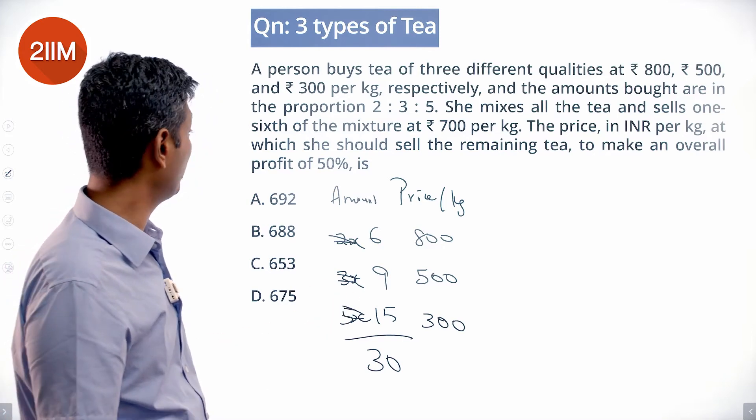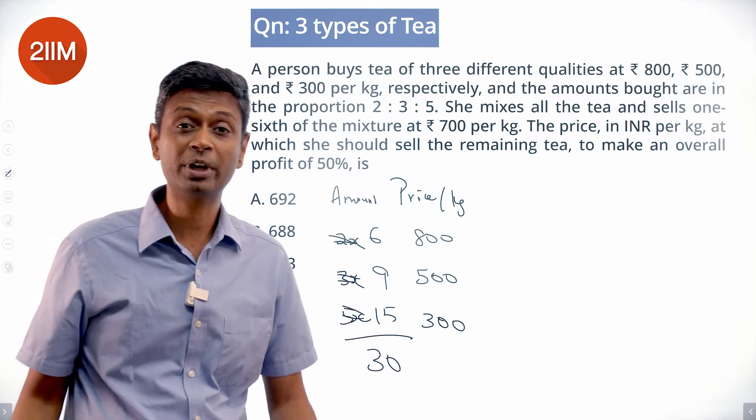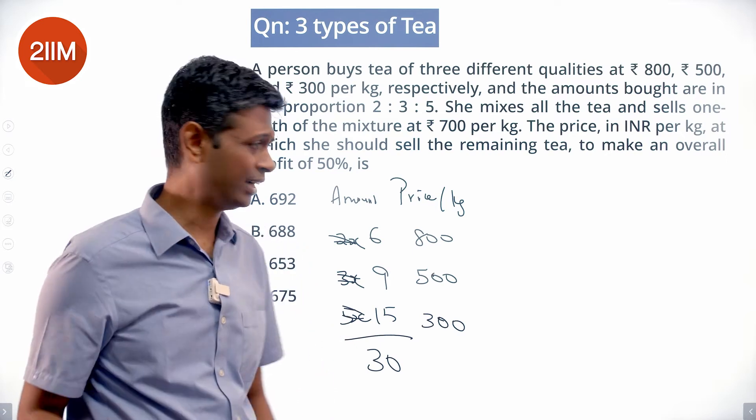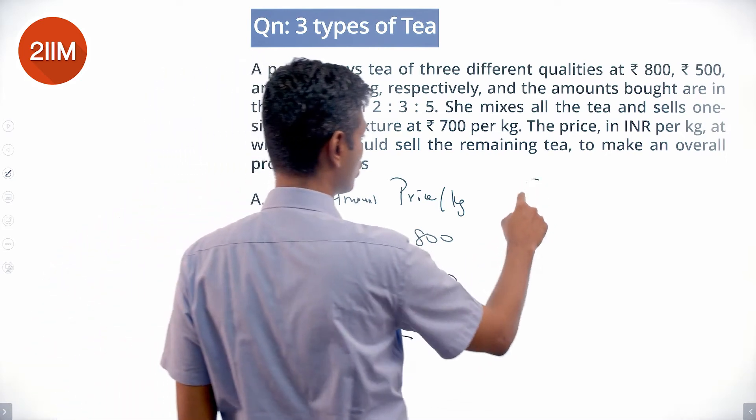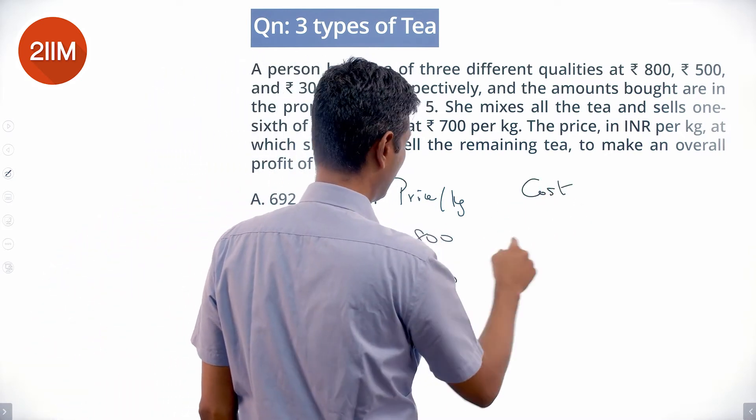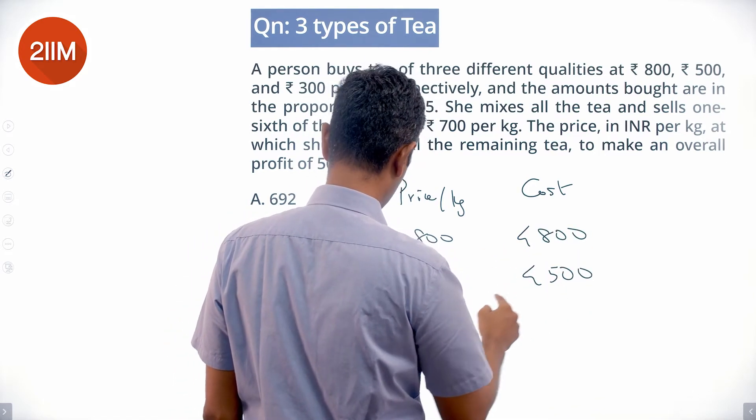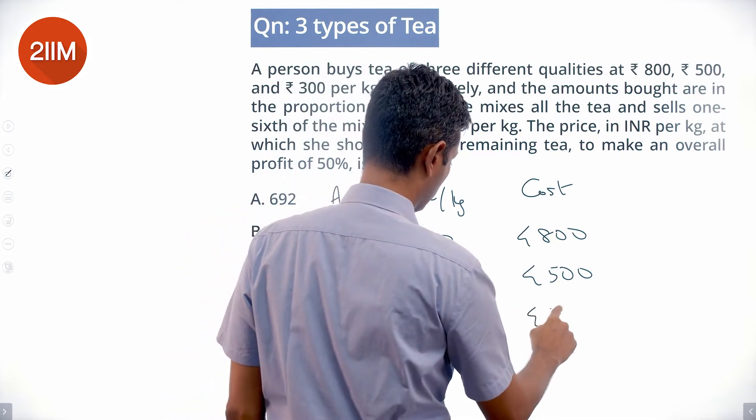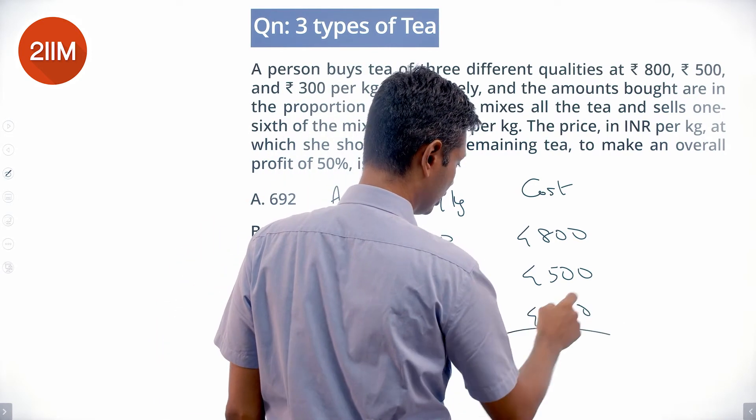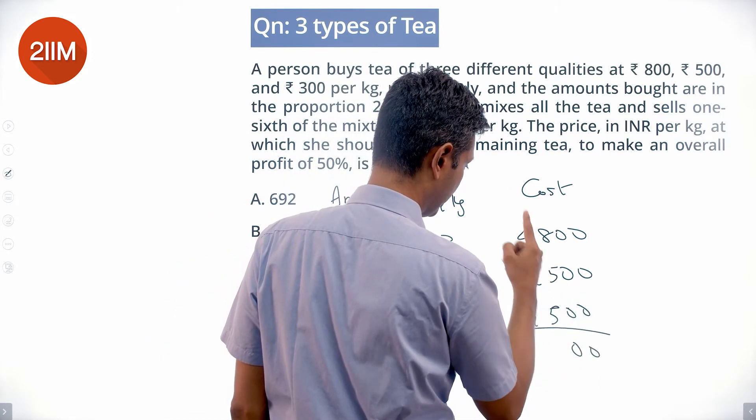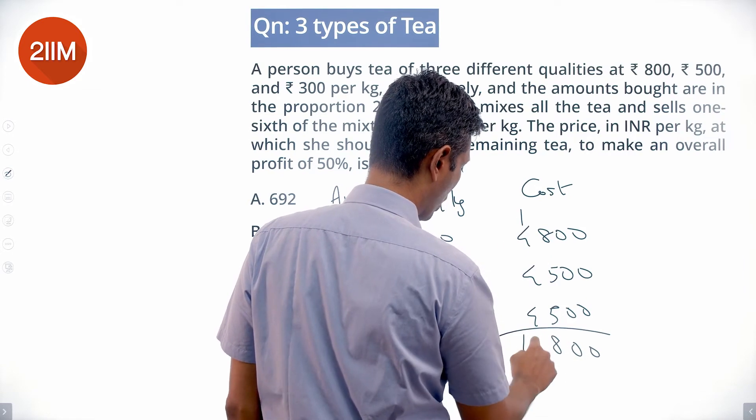She wants to make an overall profit of 50 percent. Let's start with the cost: 6 into 800 is 4800, 9 into 500 is 4500, 15 into 300 is 4500. Add all of this up: 13,800. This 13,800 is the cost price. Times 1.5 is the selling price.